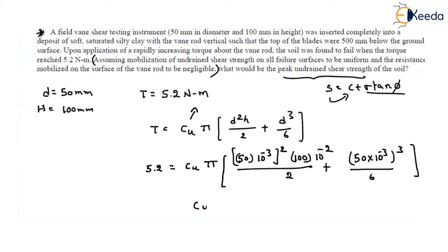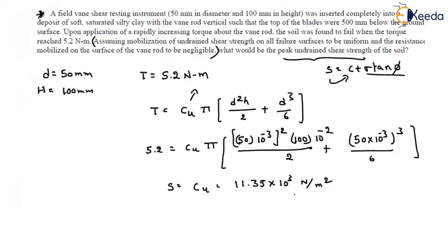Solving this gives the undrained cohesion, which is the undrained shear strength of the soil. The result is approximately 11.35 × 10³ N/m², which expressed in kilopascals is 11.35 kPa. This is a direct formula-based question — even though it looks lengthy, the solution is straightforward. Now let us move on to the next question.